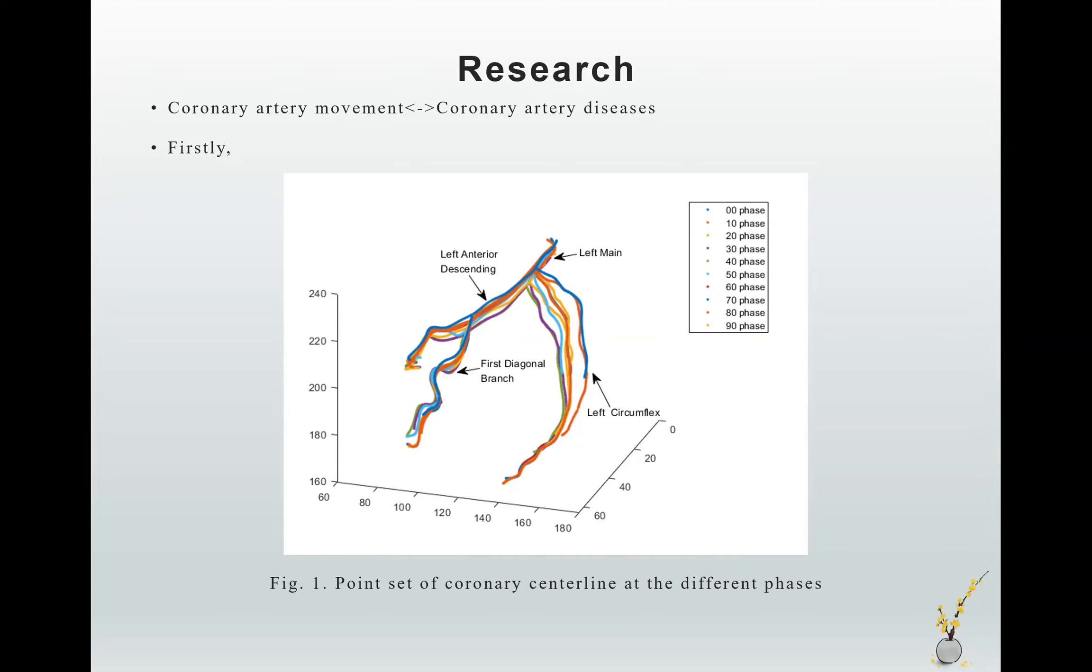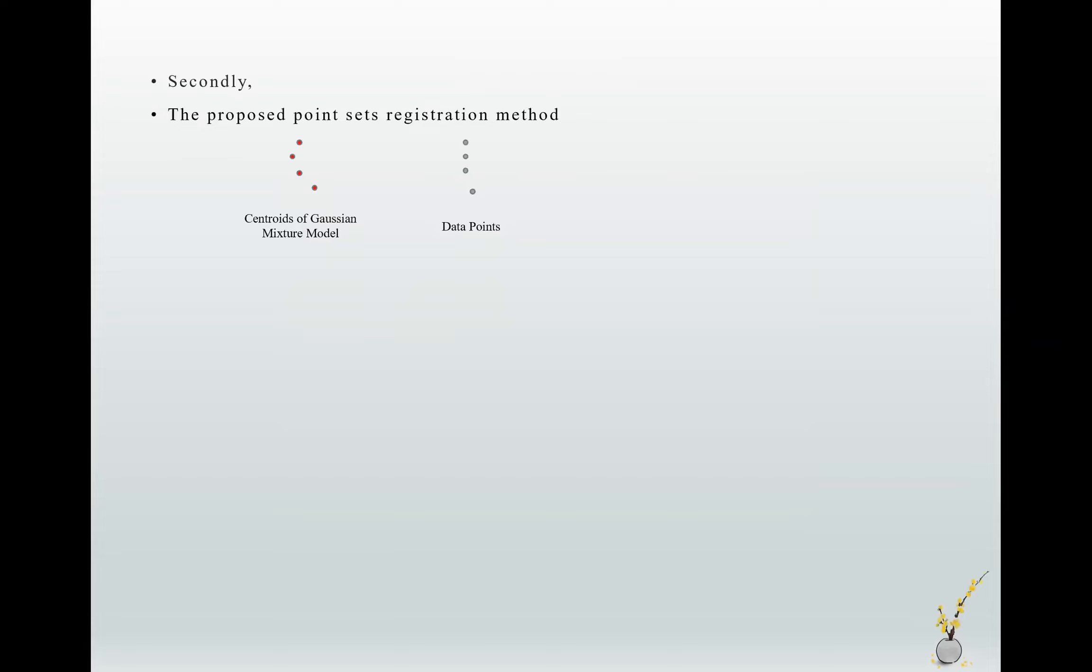You can understand it at the different times in our cardiac cycle. If I want to study the movement of the coronary arteries, I need to register the point set of the coronary centerline between two different phases. The registration method that I used is based on a probability model. This model says if you want to register the two point sets, you want to register the red point set to the blue point set.